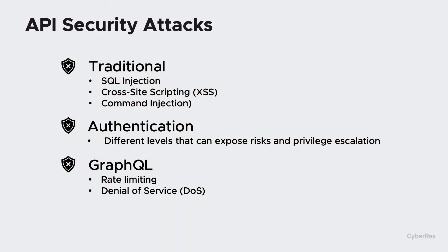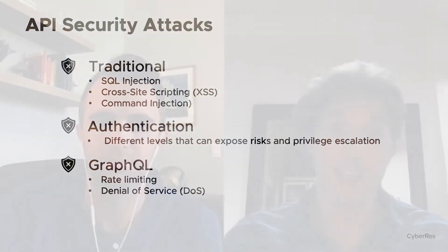It's an interesting set of attack surfaces. With GraphQL, you have things like rate limiting — denial of service is rearing its head in a new way. So APIs, while they're very similar to traditional attacks, do have their own interesting flavors.